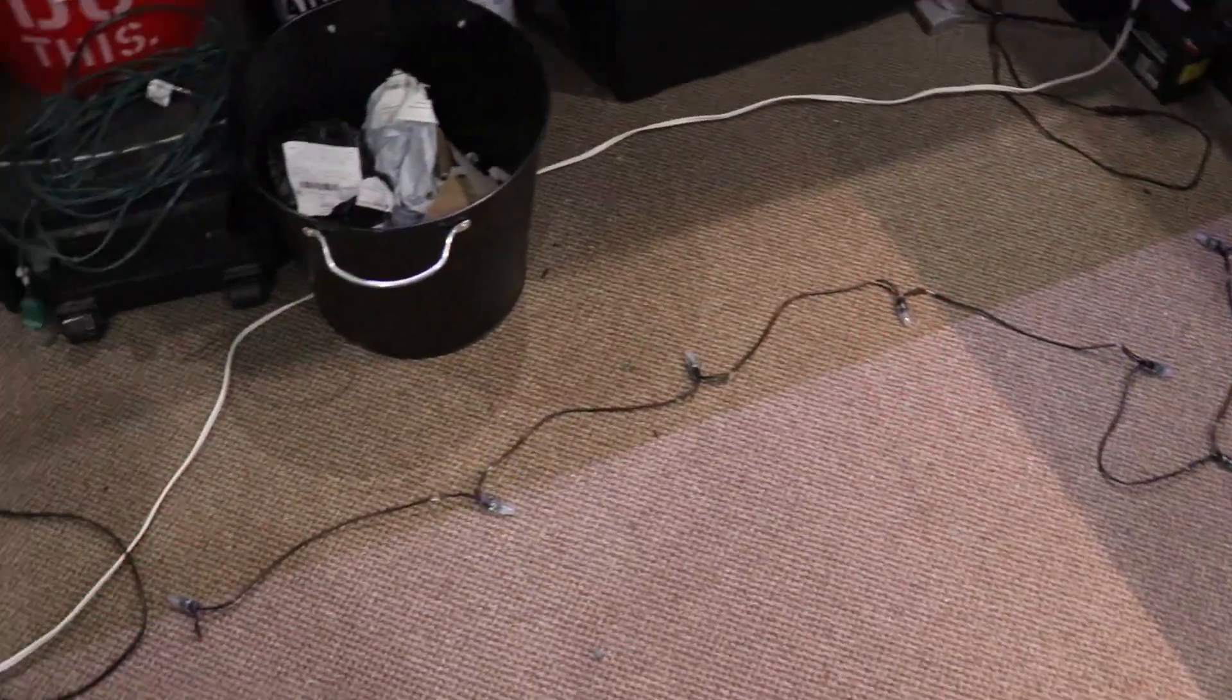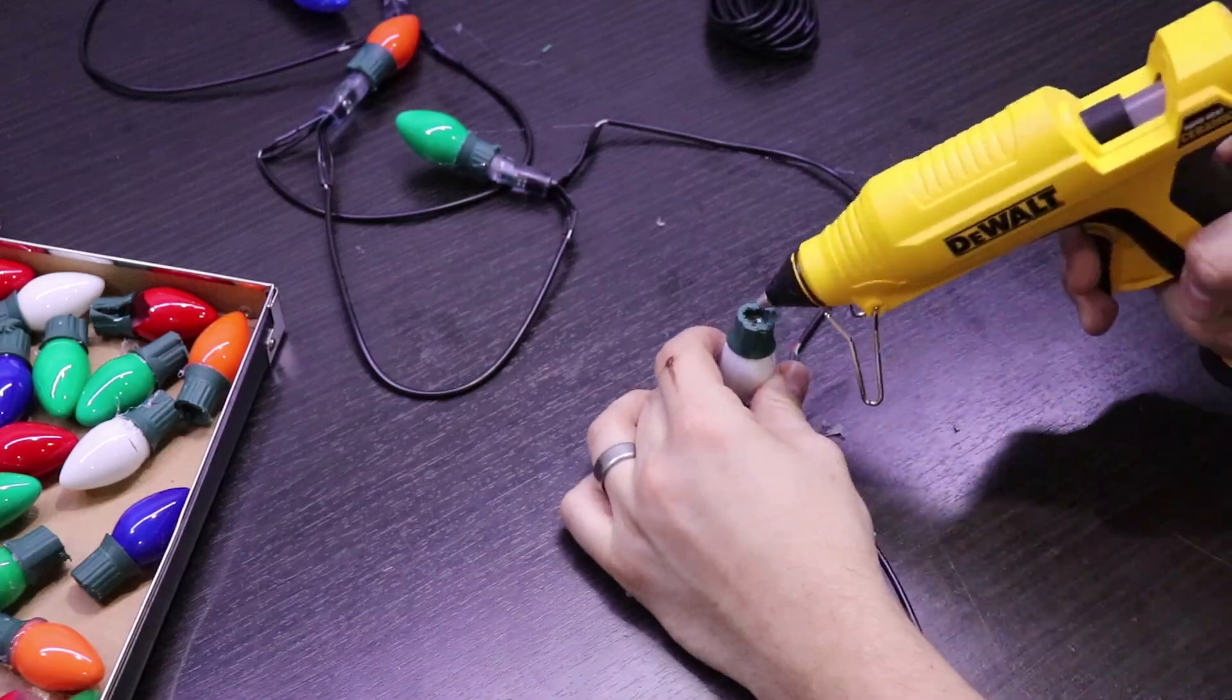Once I was done I wrote a little test code to test each of the LEDs. The last thing I'll want to do to make this like a string of Christmas lights is to attach those Christmas bulbs that I prepared earlier onto the little LEDs.